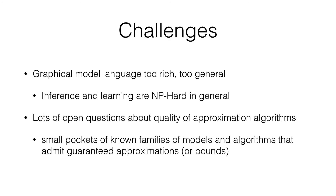We have small pockets of known families among all possible graphical models where algorithms do admit guaranteed approximations or bounds, but in general it's usually just a heuristic — you build a graphical model knowing inference is intractable but find it gives good results in practice. We are still searching for the situations where we can guarantee good results, whether worst-case or expected-case guarantees, and we have a very limited set of conditions under which we can make formal guarantees.